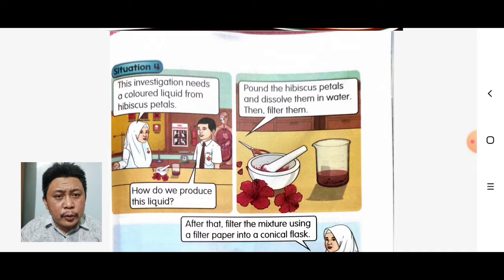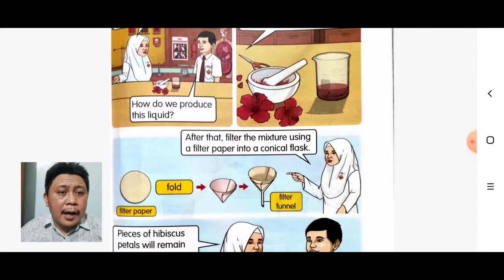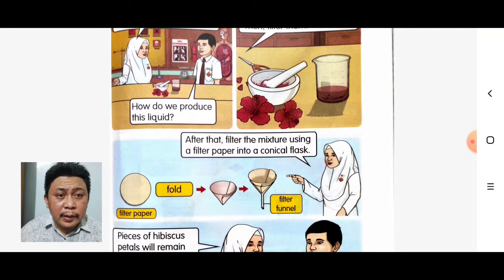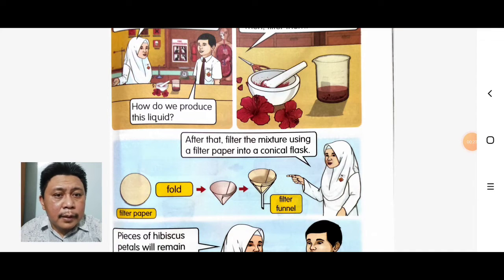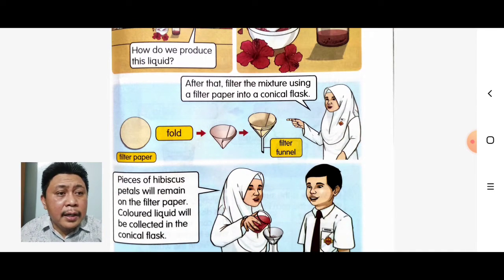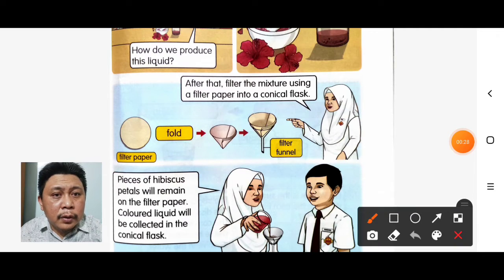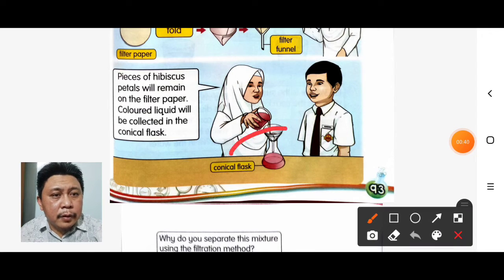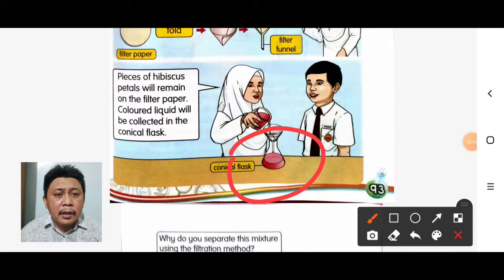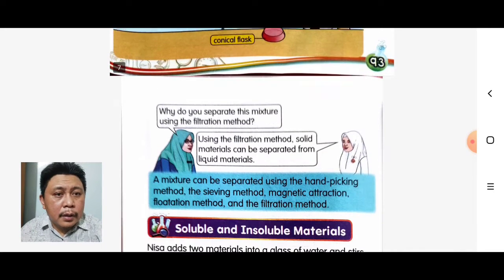This last situation needs a colored liquid from hibiscus petals. Pound the hibiscus petals, dissolve them in water, then filter them using filter paper into a conical flask. Pieces of hibiscus petals will remain on the filter paper, and the colored liquid will be collected into the conical flask.